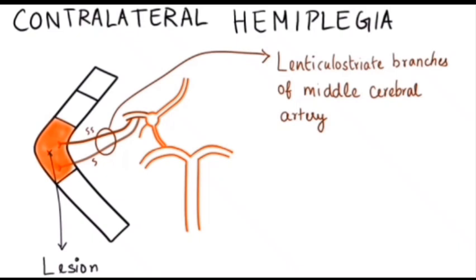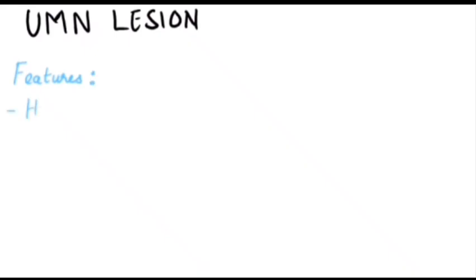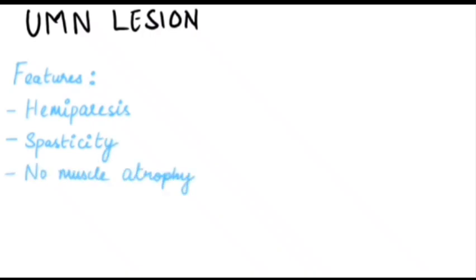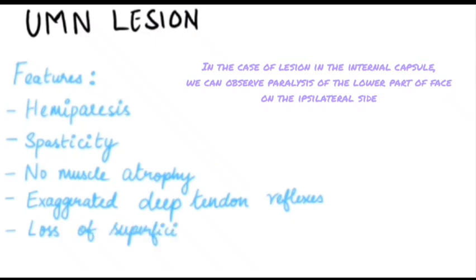It can be caused due to predisposed risk factors like diabetes and hypertension. Disorders of upper motor neuron lesion include hemiparesis, spasticity — which is the increased discharge of motor neurons and increased excitability of the motor neuron pool — no muscle atrophy since lower motor neurons are intact, exaggerated deep tendon reflexes, loss of superficial reflexes, and a positive Babinski sign.